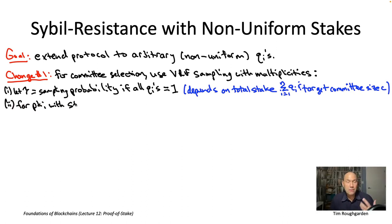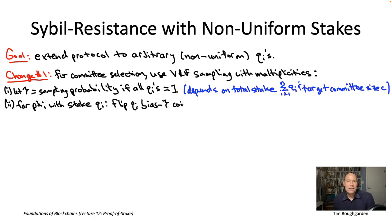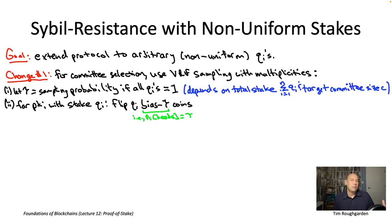The plan is to treat an active validator with 10 staked coins as if it had registered 10 times under different public keys with one coin each. To do this, we flip 10 coins—one for each sybil it could have created—and each coin comes up heads with probability tau. The active validator with 10 staked coins then inherits the results of these 10 independent biased-tau coin flips.